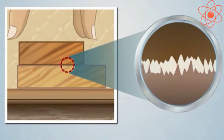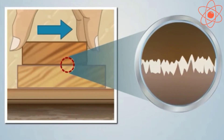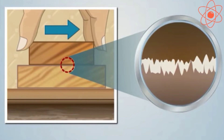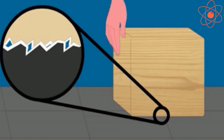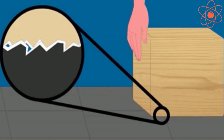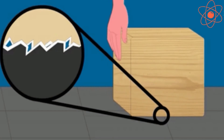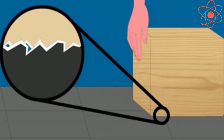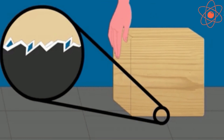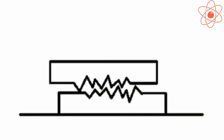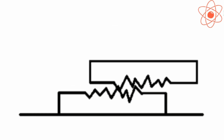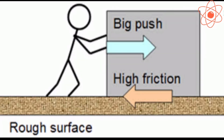When two surfaces slide over each other, the irregularities of these surfaces interlock with each other. This interlocking opposes the motion between the surfaces in contact and gives rise to friction. When we attempt to move one object over the other, we have to apply a force to overcome the interlocking of the irregularities in their surfaces. More the roughness of a surface, larger is the number of irregularities on its surface and hence greater will be the friction.